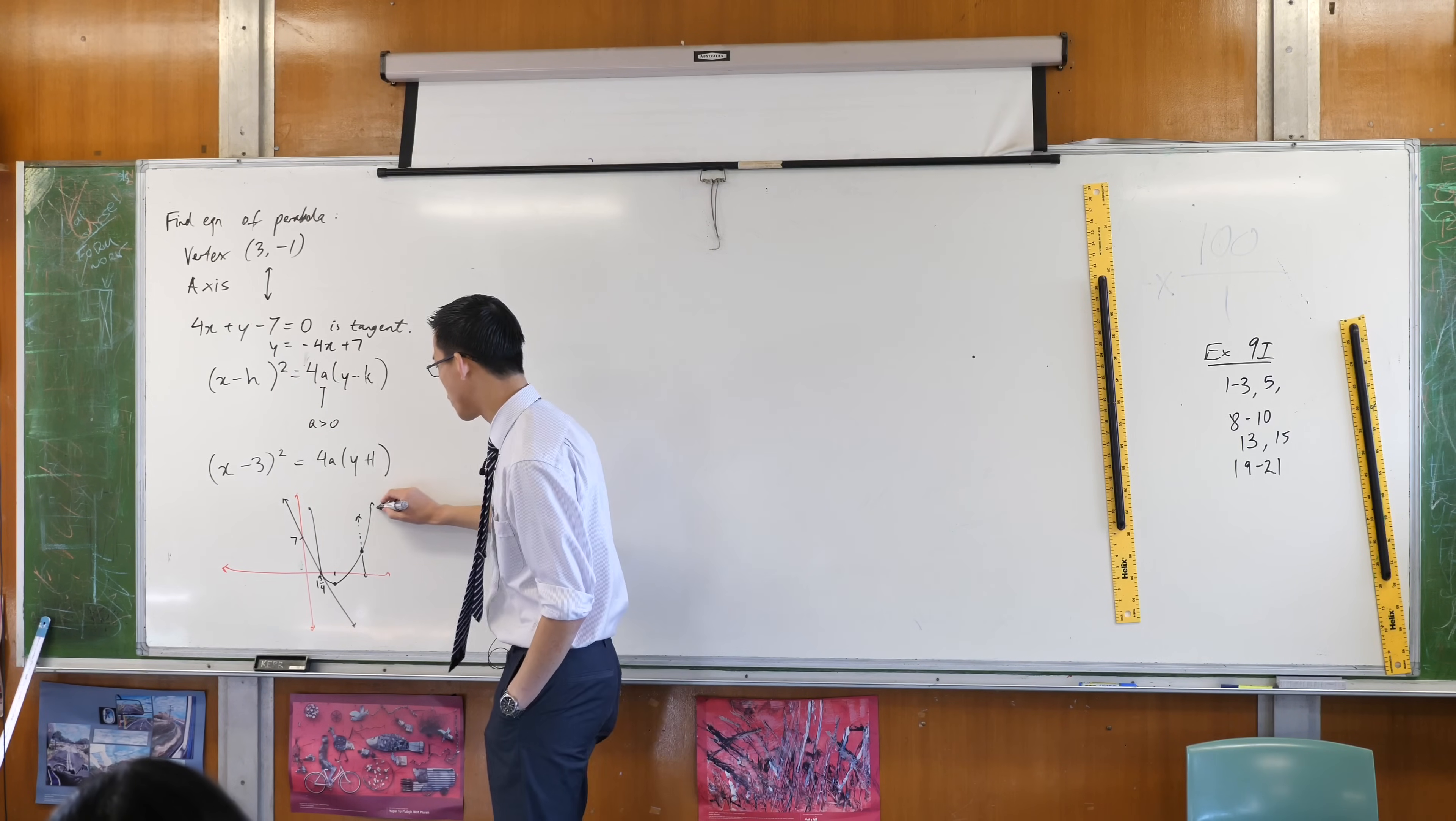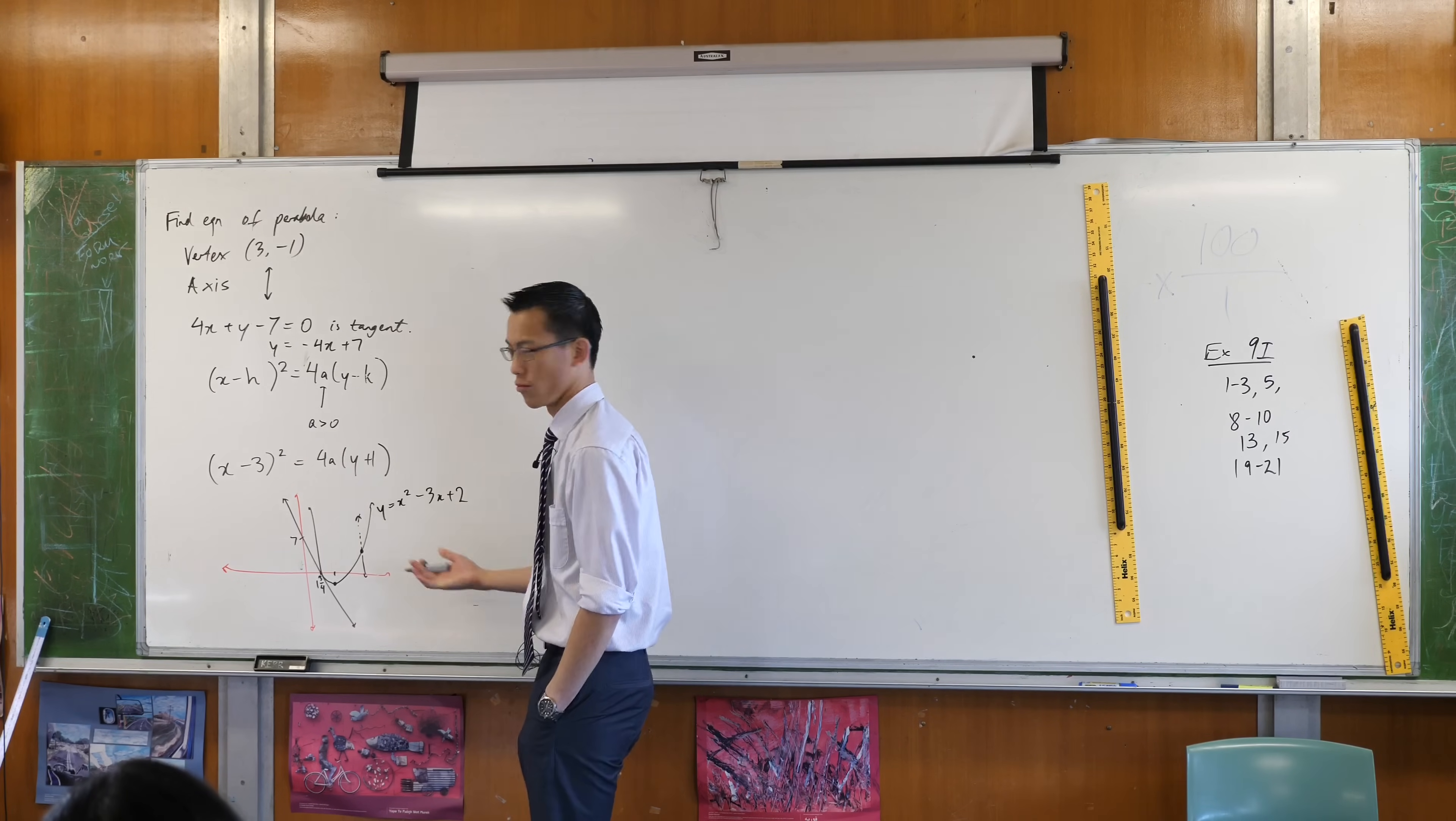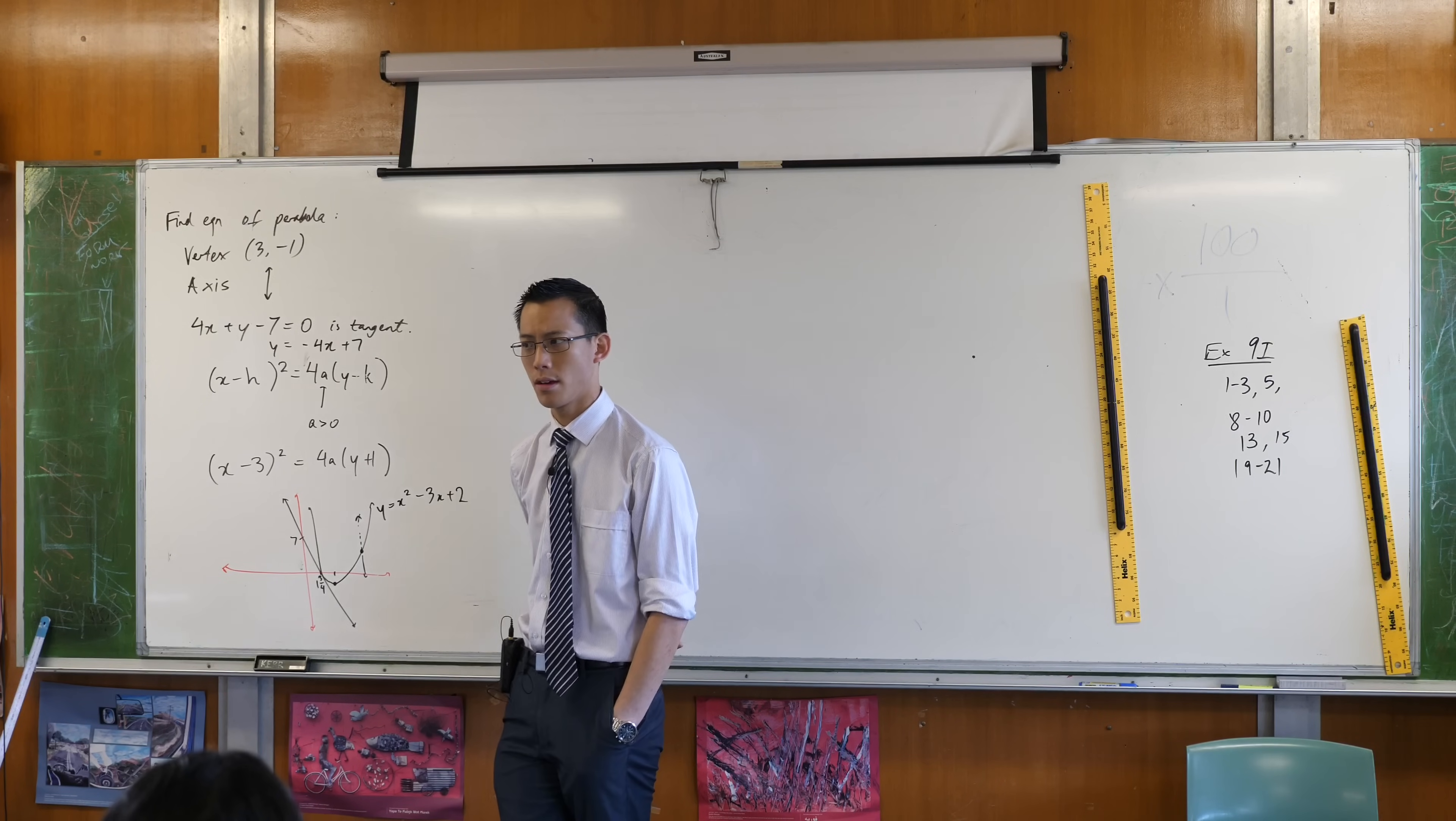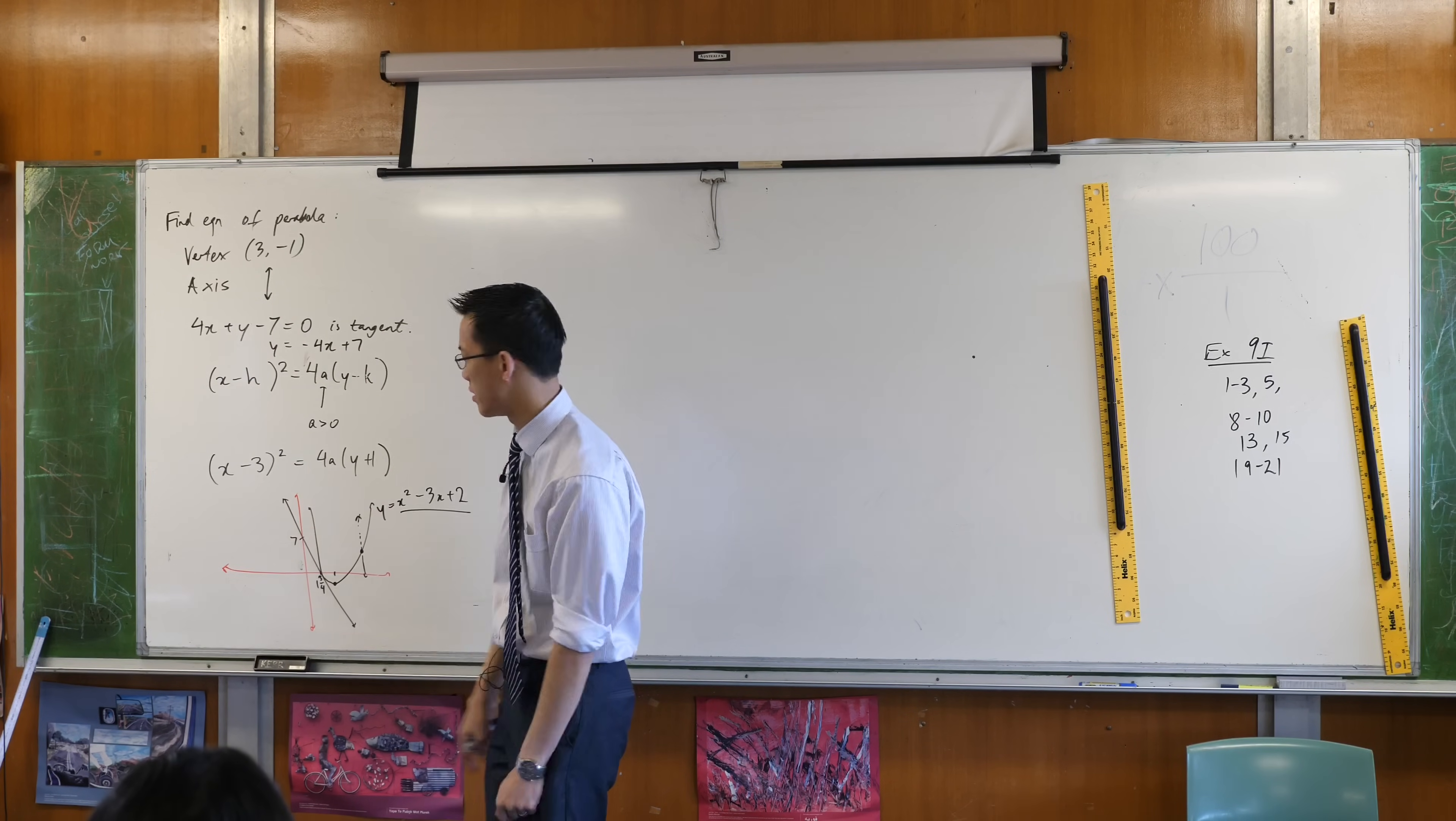Suppose you actually knew what the equation of this parabola was. Suppose, I'm just going to make something up. So it was like x squared minus 3x plus 2, whatever. If that were the equation, and I asked you to find the equation, the coordinate to that point, what would you actually do to find them? You'd solve simultaneously, because what you want is the parabola and the equation to be at the same place at the same time, hence simultaneous.